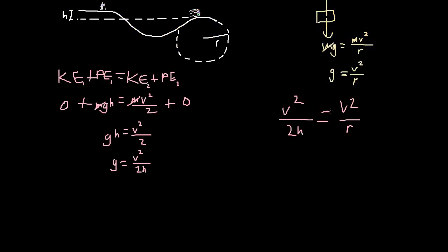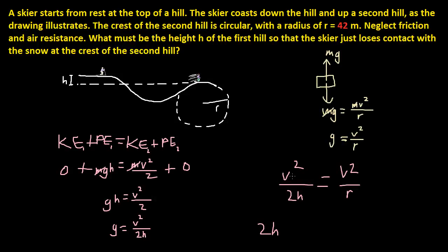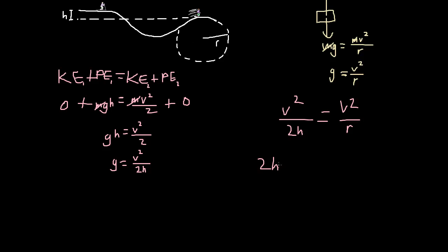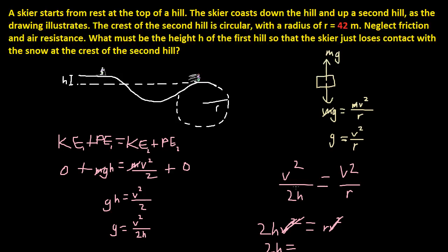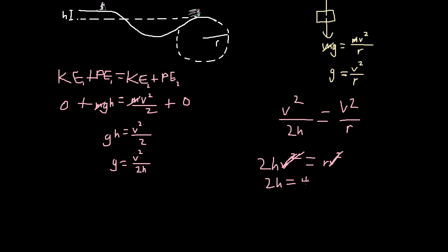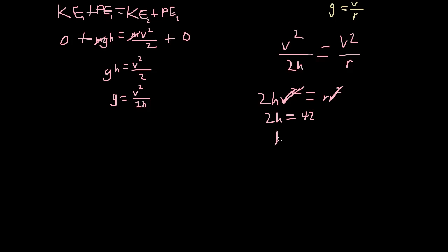Okay. So now let's cross-multiply. So 2h times v squared is equal to r times v squared. And v squared cancels out. Because 2h is equal to r. And r is 42 meters. So h is just 42 divided by 2. Because if you divide by 2 on each side, you get h.